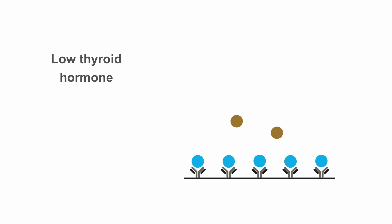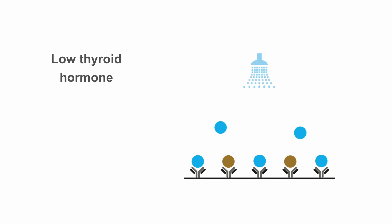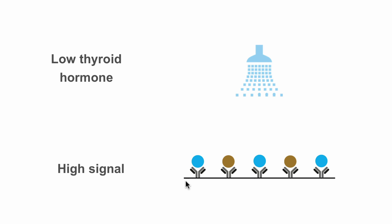Conversely, a patient with low thyroid hormone levels will only displace a few of the radiolabeled analogs. Those will be washed away, leaving a high signal. This signal is measured, and from that result, we're able to calculate the amount of total thyroid hormone that was present in the original sample, and that is the result that is reported out to you.